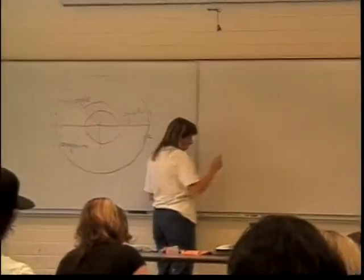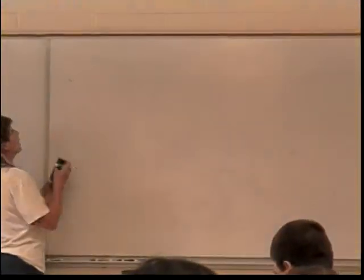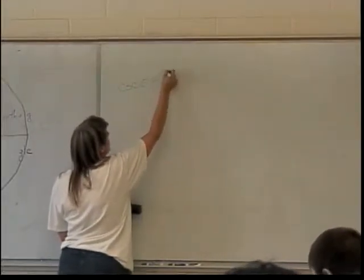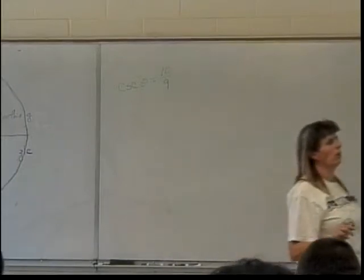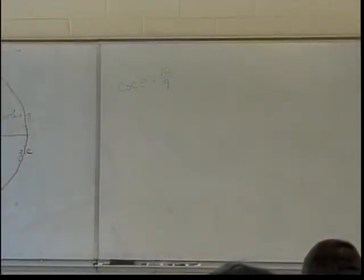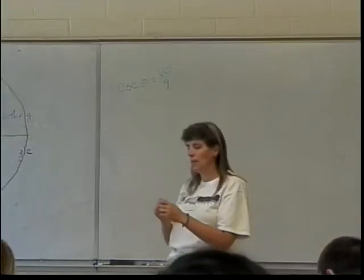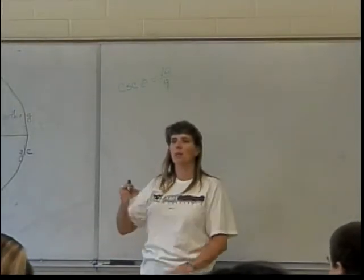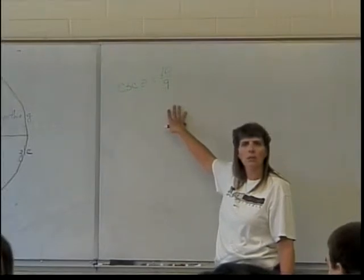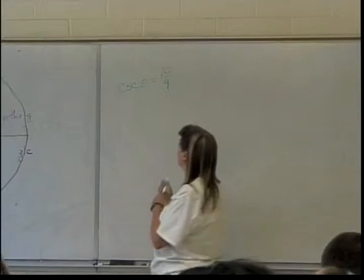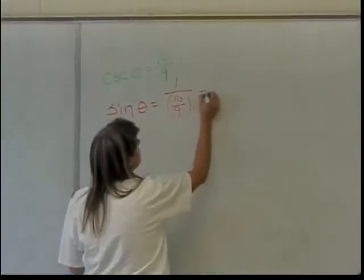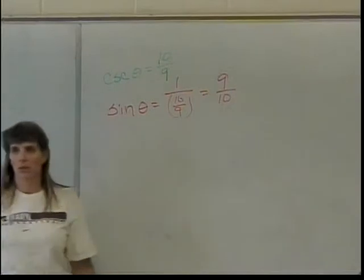Cosecant of theta is 10 over 9. Now I'm going to ask you to find all of these. The sine of theta, the cosine of theta, the tangent of theta, the secant of theta, and the cotangent of theta. There's one of them which is really easy. Which one? Cosecant. Is it the sine or the cosine? The sine. It's the sine. Because remember, your cosecant is what? 1 over sine. It flips over the sine. So that means my sine of theta is going to be 1 over 10 over 9, which is 9 over 10. So far, so good?